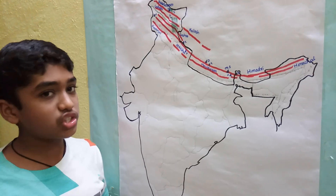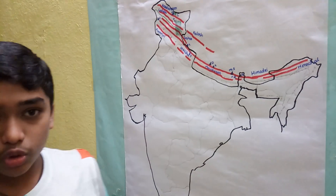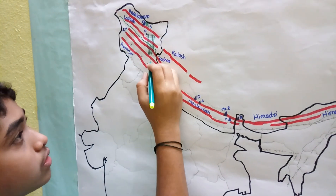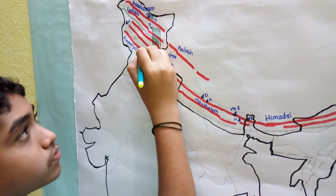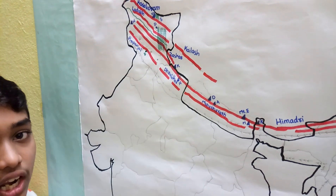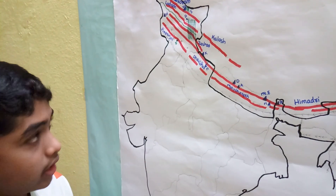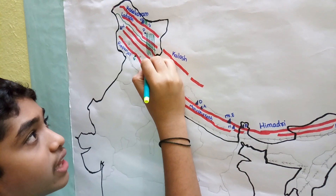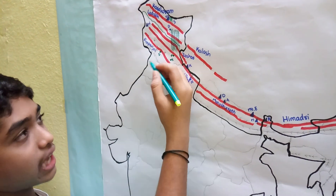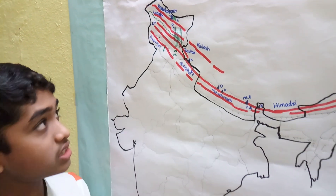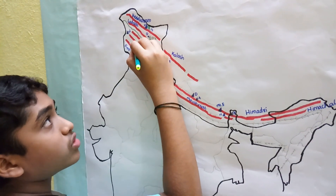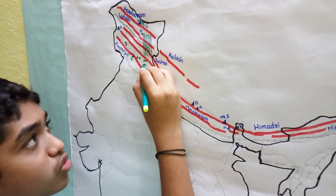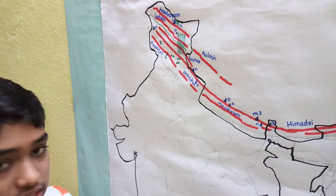We find many hill stations and valleys in the Himachal range. Important hill stations include Dharamsala, which has the highest cricket ground in the world, Kulu, Manali, and Shimla, the capital of Himachal Pradesh. Important valleys include the Kashmir Valley, the Kangra Valley, and the Kulu Valley, which is also a hill station.